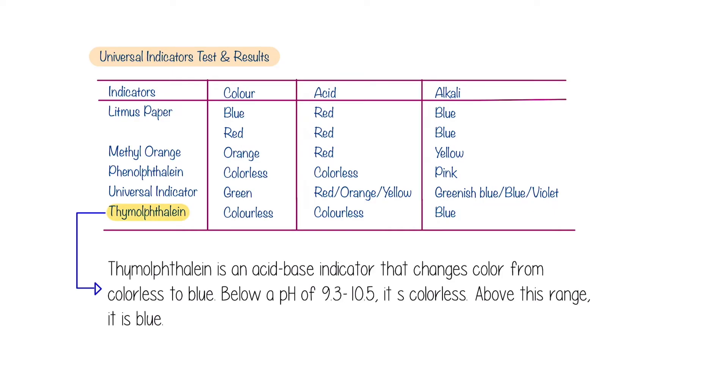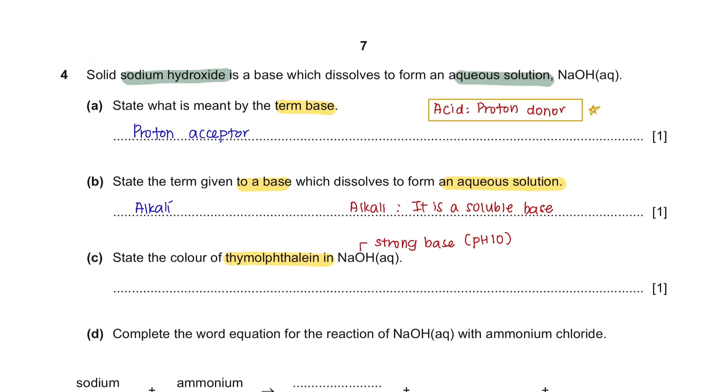Thymolphthalein is an acid-base indicator that changes color from colorless to blue. Below a pH of 9.3 to 10.5, it's colorless. Above this range, it is blue. So since sodium hydroxide is at a pH of 10, the color here would be blue.